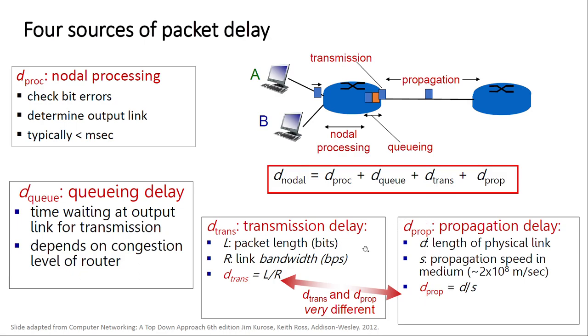As you can see, these two delays are important and most delays come from transmission and propagation. Unless you are under a denial-of-service attack, in which case queueing will also be a major source of delay.